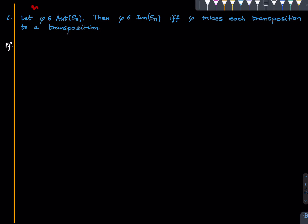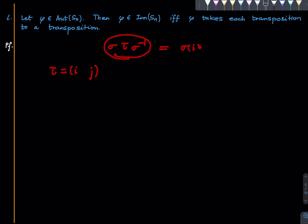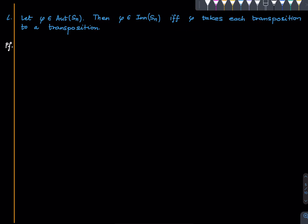Fix an automorphism φ of Sₙ. We show that it will be an inner automorphism if and only if it preserves transpositions — meaning it takes each transposition to another transposition. One direction is clear: if φ is an inner automorphism, then conjugating a transposition (i j) by sigma gives the transposition (σ(i) σ(j)), which is again a transposition. So the easy direction is done; we will now handle the less trivial direction.